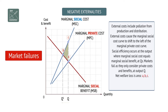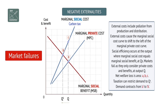So what can be done? A carbon tax could help reduce production to a more socially efficient and sustainable level, with demand contracting from A to B. As is often the case, the effectiveness of a tax depends on the consumer's PED for the polluting product.